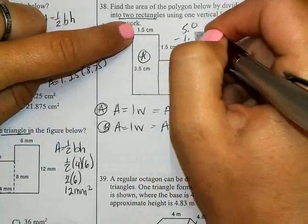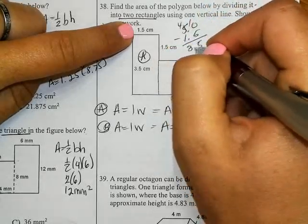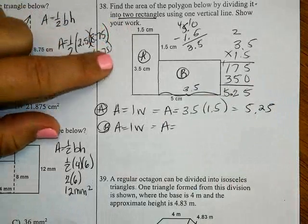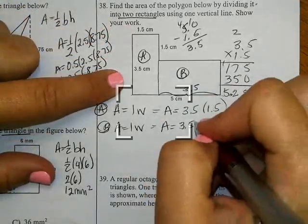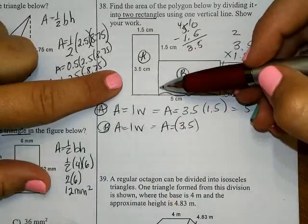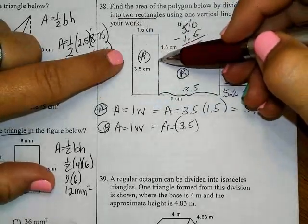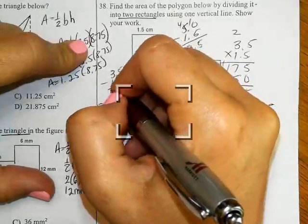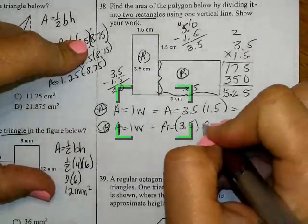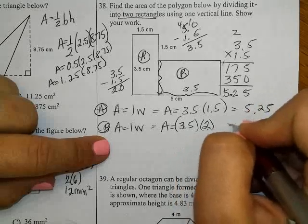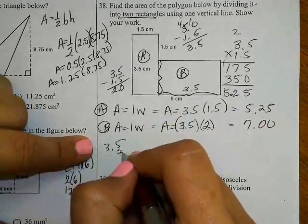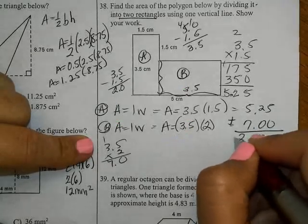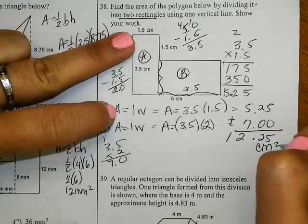Shape B. Write my formula. So if this whole thing is 5 and that is 1.5, 5 minus 1.5 gives me 3.5. So this measurement here is 3.5. So I have 3.5 times—now I need to know what this is. If I know the whole thing is 3.5, I need to subtract this piece to figure out this piece. 3.5 times 2. Multiplying it out, the answer is 12.25 centimeters squared.